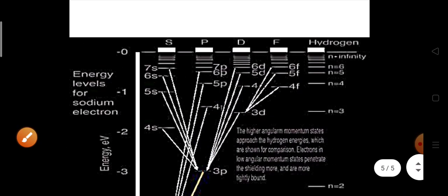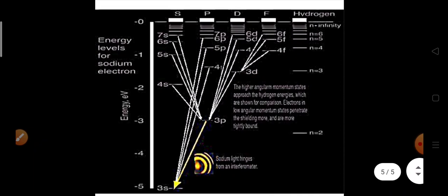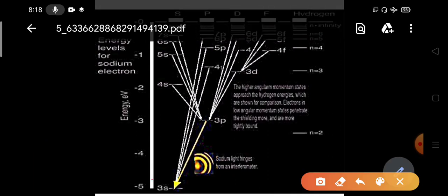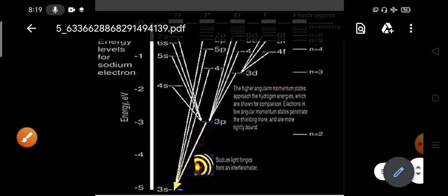Next we see another spectrum, the spectrum of sodium line. Here 3S is the ground state because 1S2, 2S2, 2P6, then 3S1. 3S, 3P, 4S, 3D, 4P, 5S, like that and the allowed transitions are here the same. The 3P to 3S, 4P to 3S, 4S to 4P, D to P, F to D.